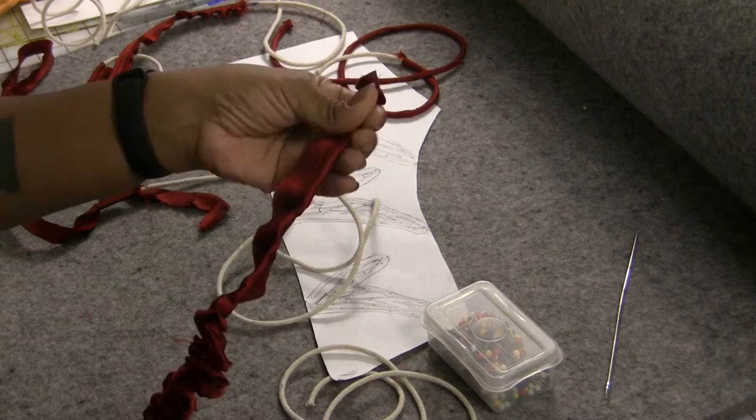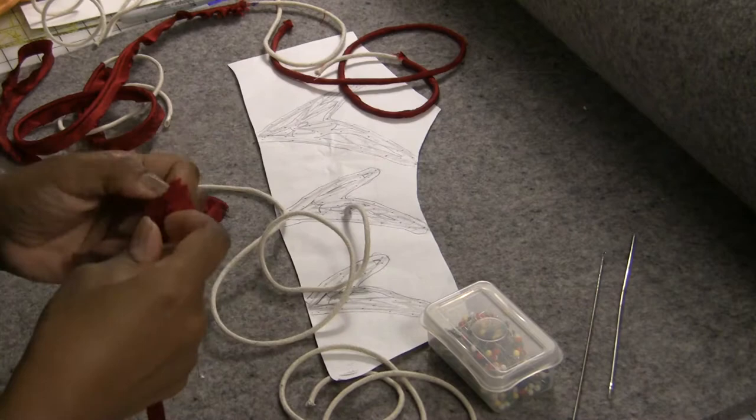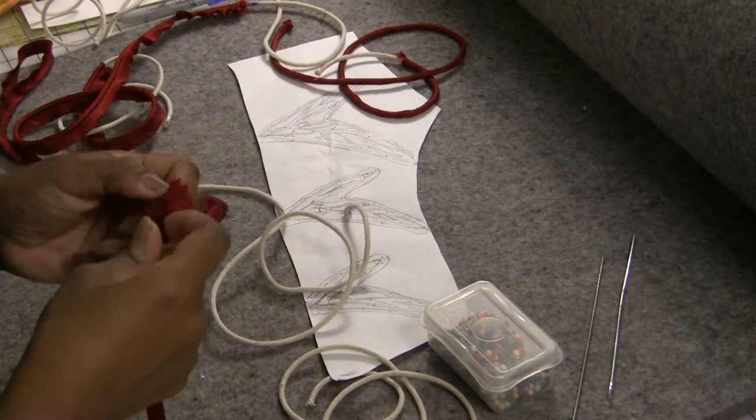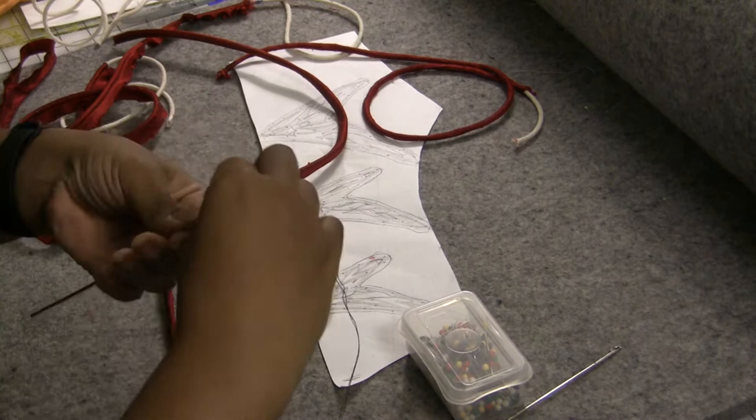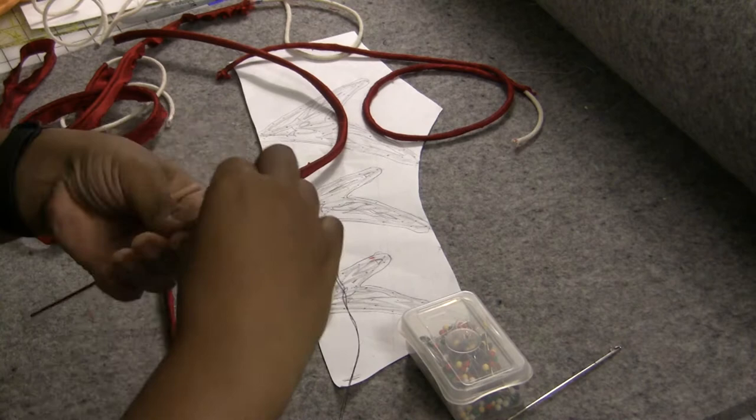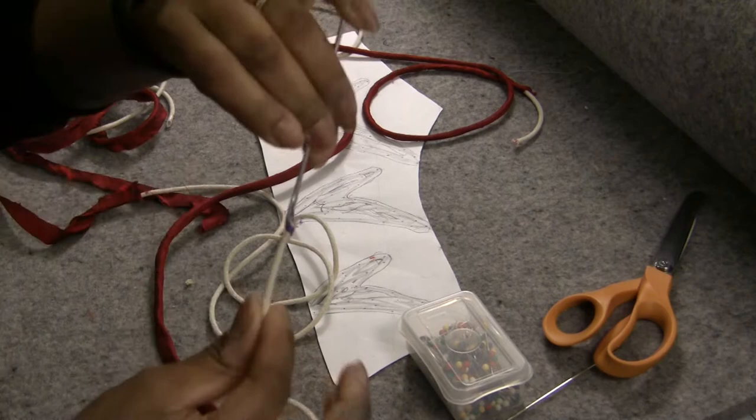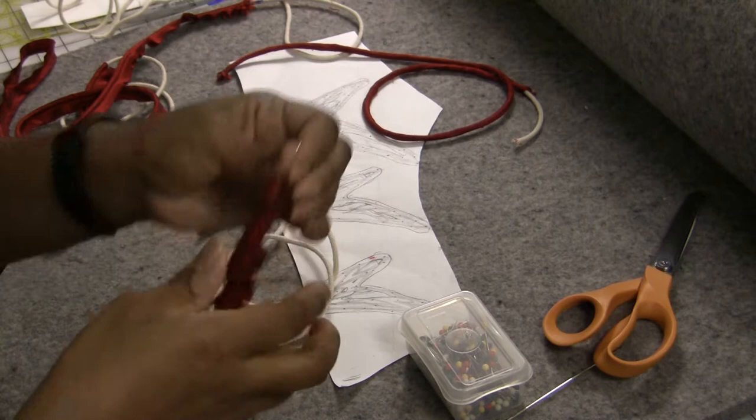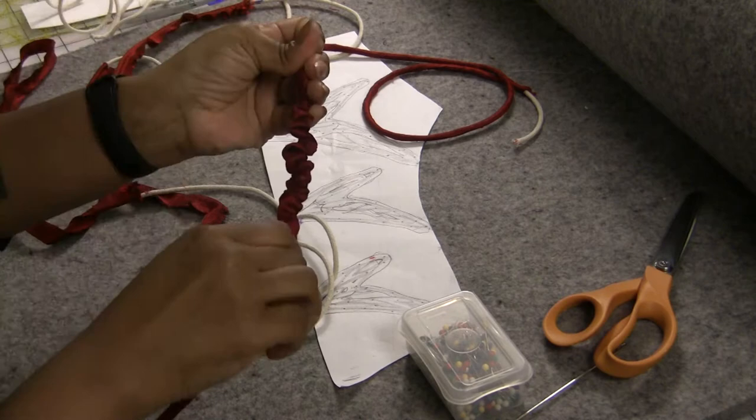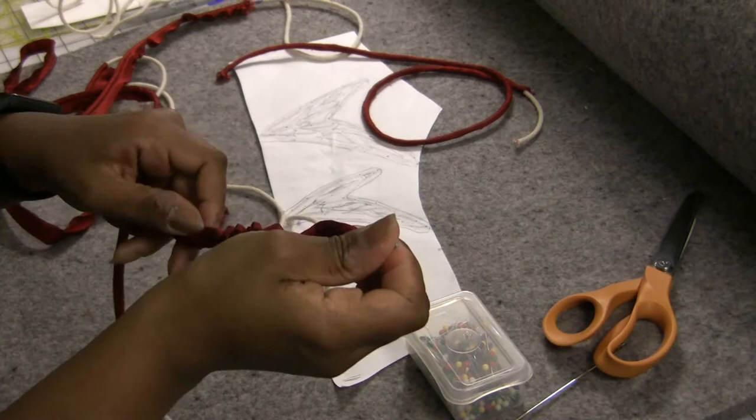Now we make some red rouleau. I trim the seam allowance, turn the fabric, wax the end of the cord, pull linen thread through the cord and the eye of the bodkin, then pull the cording through. Oh wait, no I don't. I get stuck on the bias tape seam and have to pull the whole thing out and go at it from the other end. Of course.